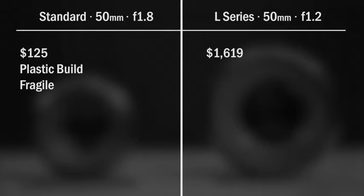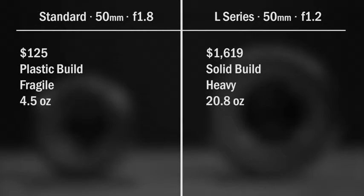Conversely, the 50mm L-Series F1.2 feels very solid. It's definitely heavier. In fact, the inexpensive lens is about 4.5 ounces, and this L-Series lens comes in at about 20.8 ounces. So quite a bit heavier, but feels more solid, definitely feels tightly put together. So those are definitely factors to consider for longevity.